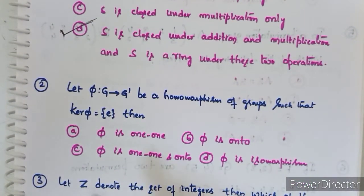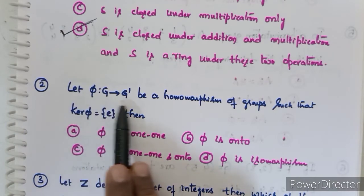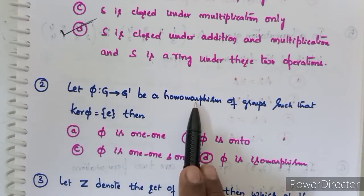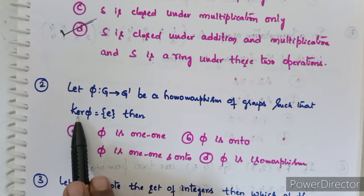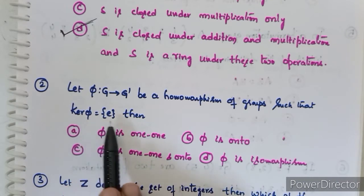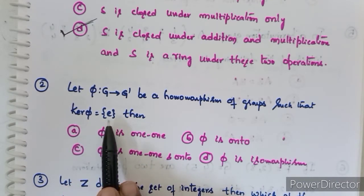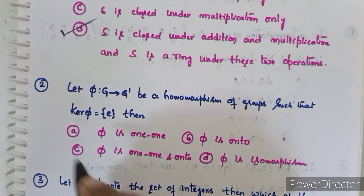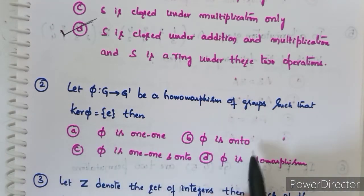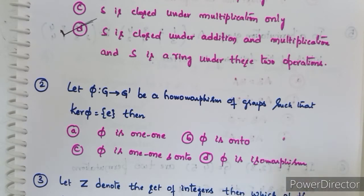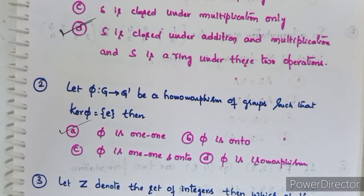Second question: let phi map from G to G' be a homomorphism of groups such that kernel of phi equals the identity element {e}. Then phi is: one-to-one, onto, one-to-one and onto, or an isomorphism? Option A, phi is one-to-one, is correct.